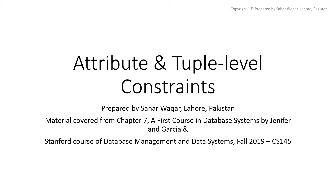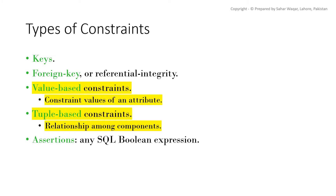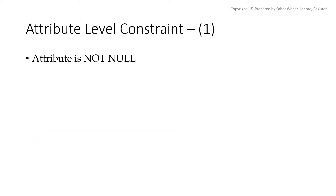Bismillah ar-Rahman ar-Rahim. Assalamu alaikum. In this lecture we will study about two types of constraints: attribute level and tuple level constraints. Value-based constraints are attribute level constraints — when a constraint is applied on a single attribute it is value-based, while a tuple-based constraint is applied on a tuple as a whole. Rest of the types are discussed in different lectures of the same series. Let's figure out attribute level constraints first.